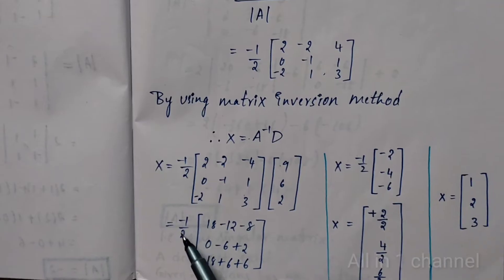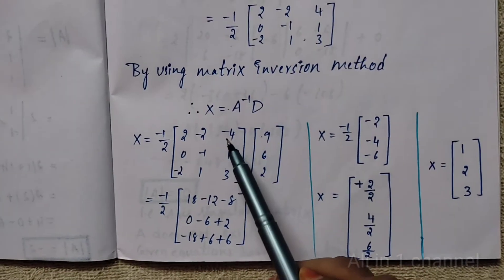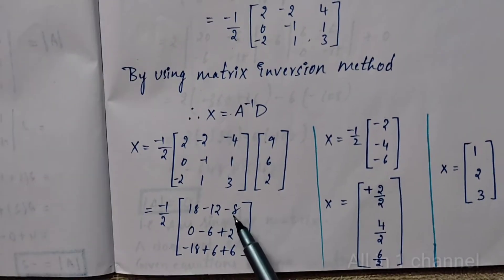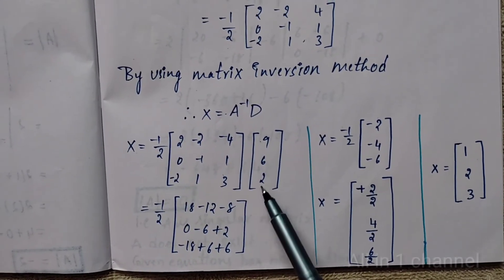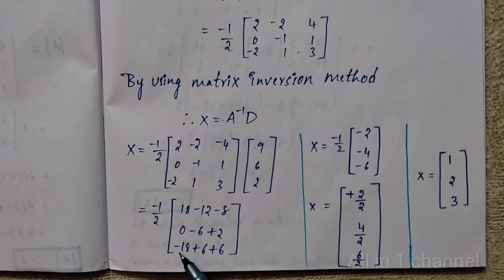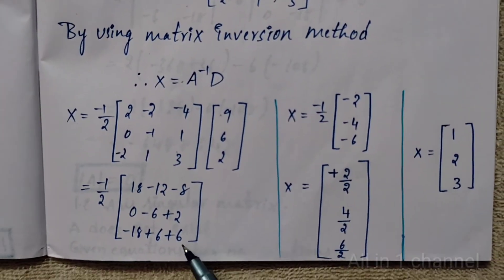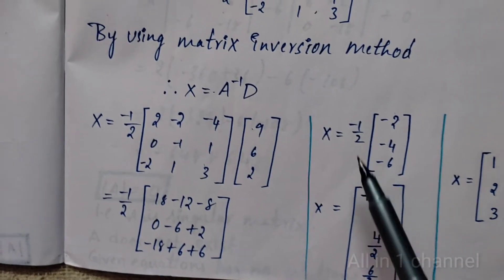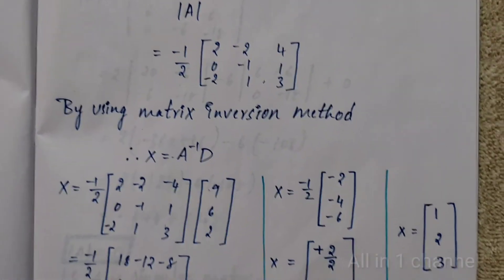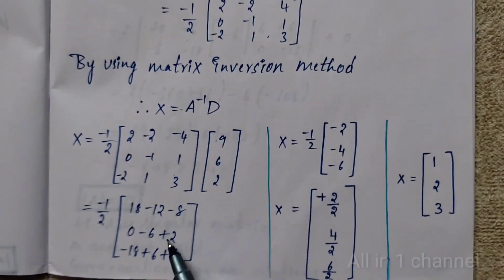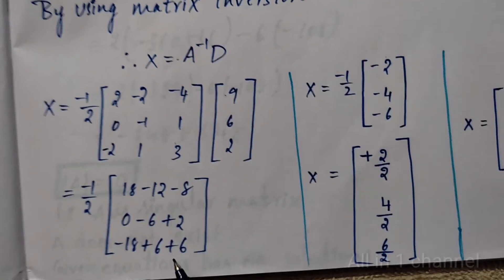X equals minus 1 by 2 times A inverse times D. Computing the matrix multiplication: first row — 2 into 9 = 18, minus 2 into 6 = minus 12, minus 4 into 2 = minus 8. Second row — 0 into 9 = 0, minus 1 into 9 wait... 0 into 9 = 0, minus 1 into 6 = minus 6, plus 1 into 2 = 2. Third row — minus 1 into 9 = minus 9 (as minus 18), plus 1 into 6 = plus 6, plus 3 into 2 = plus 6.